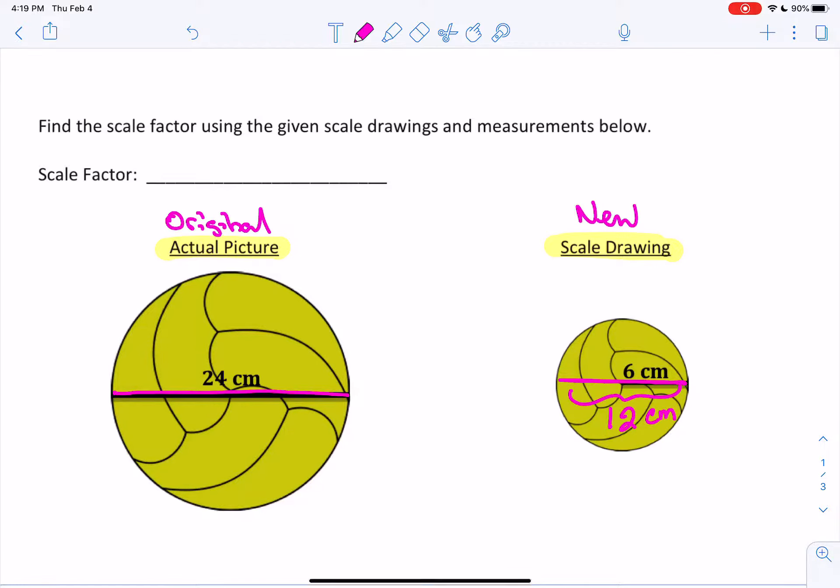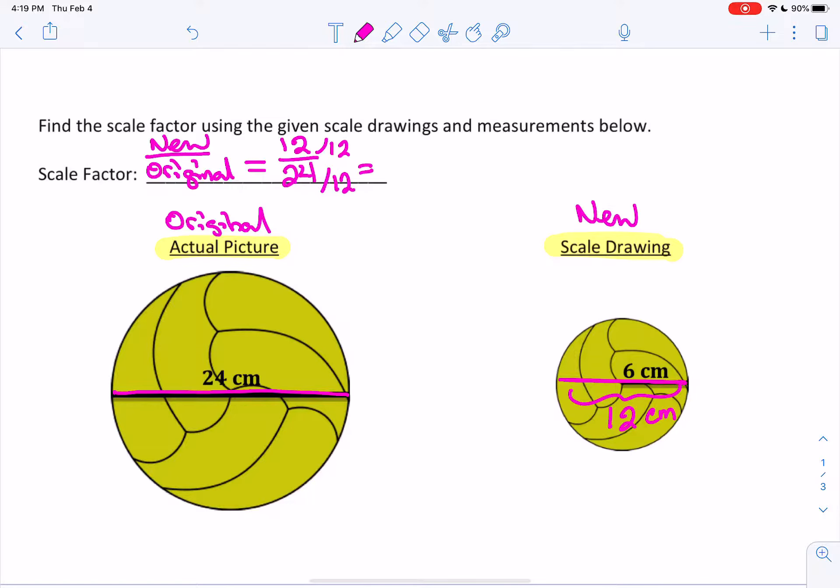Now we're ready to calculate scale factor. So remember, the scale factor equals new divided by original. In this case, the new width of the ball is 12, and the old width, or the original width of the ball was 24. Okay, we can simplify this because 12 goes into 12, and 12 goes into 24. 12 goes into 12 one time, 12 goes into 24 two times, and we get a half or 0.5.